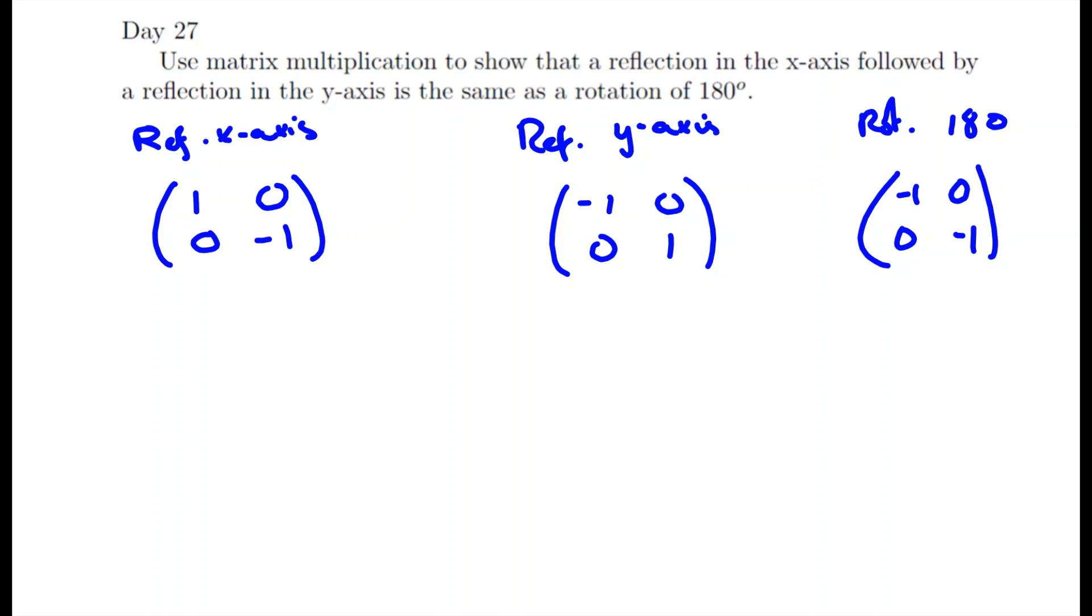Now, when we do one transformation followed by the other, we're actually going to do the order the opposite way. So as this one was done second, we will do our matrix multiplication with this one first. And the same thing the other way around here, so this will become second.